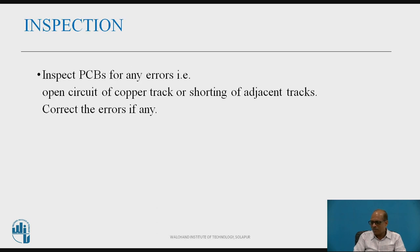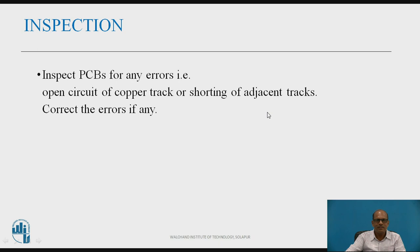Next is inspection. Inspect the PCBs for any errors — that is, open circuits of the copper conducting tracks, where some tracks may become open circuit during etching, or some adjacent tracks may have a short circuit. If there are such open circuit or short circuit errors, correct these errors.